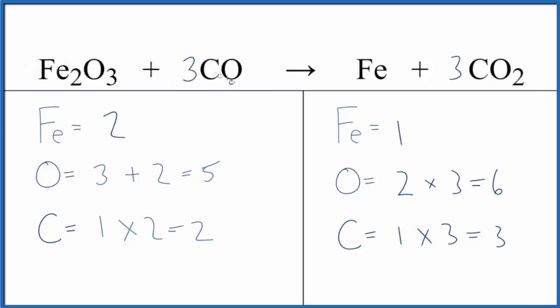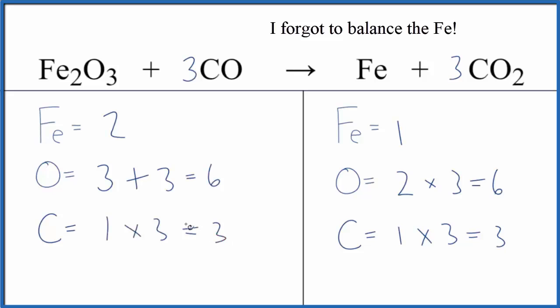Coefficient of 3, we have 3 oxygens here, plus 1 times 3 gives us 6 oxygens. 1 times 3 for the carbon. That gives us 3 carbons, and we're done.